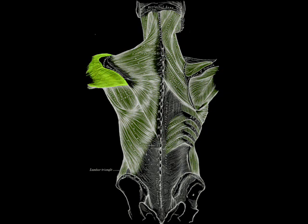When all its fibers contract simultaneously, the deltoid is the prime mover of arm abduction along the frontal plane. The arm must be internally rotated. This makes the deltoid an antagonist muscle of the pectoralis major and latissimus dorsi during arm adduction.